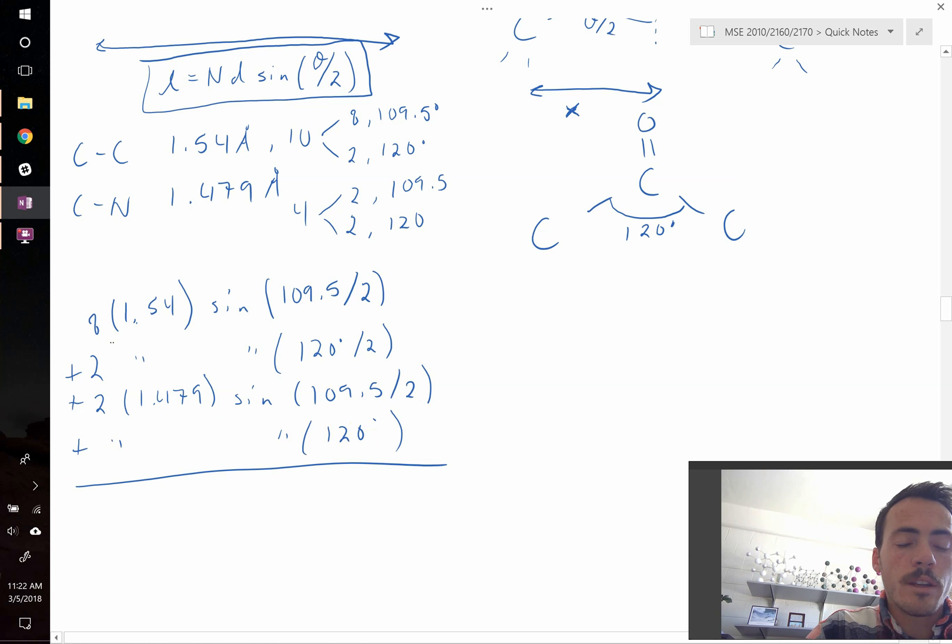So when I plug all that in, I find that the distance of each mer unit, if it was stretched out in a line, you know, not bending the bonds, but you know, in a straight line, then we would get that to be equal to 17.706 angstroms, right?